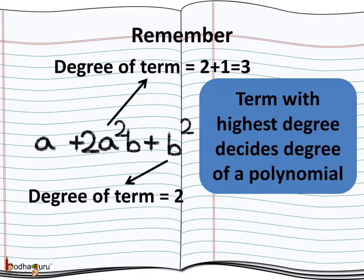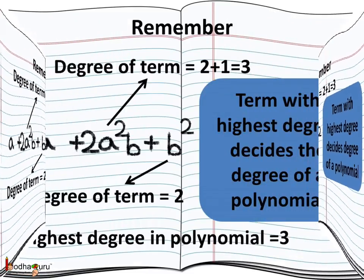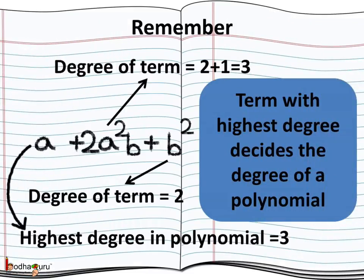The highest degree of any term in the expression is the degree of that polynomial. Here, the term b² is of degree 2. But the term 2a²b has degree 2 + 1, which is 3. Hence, the degree of this polynomial a + 2a²b + b² is 3.